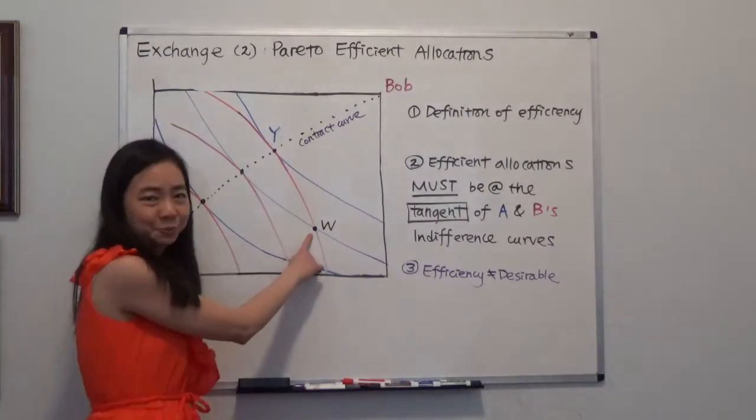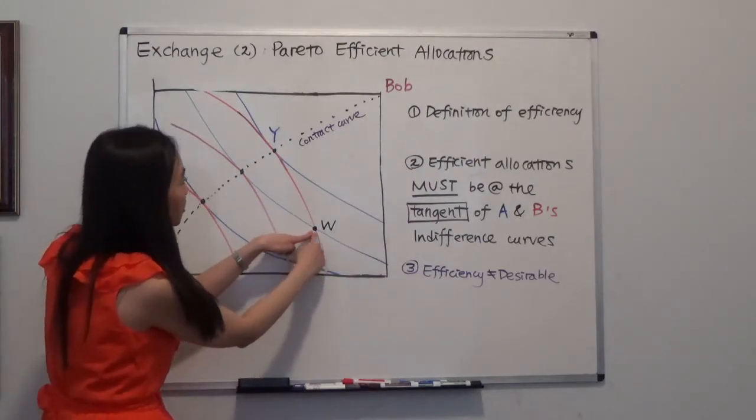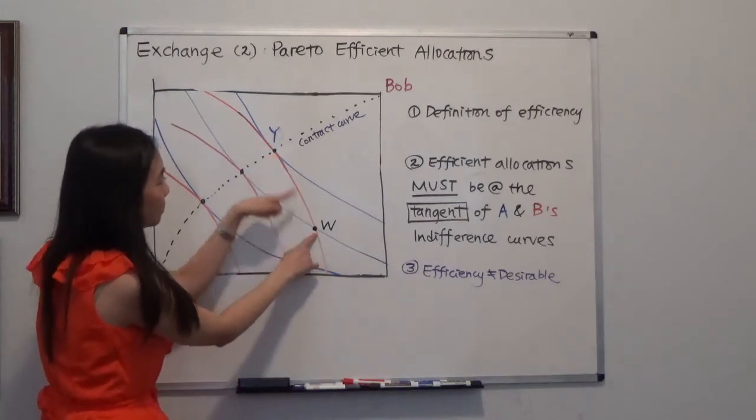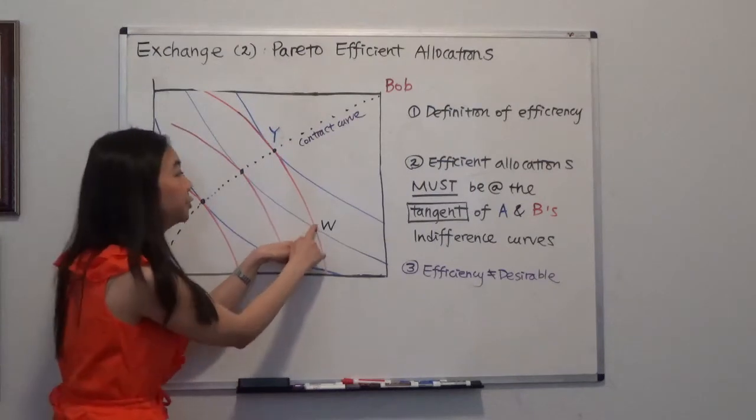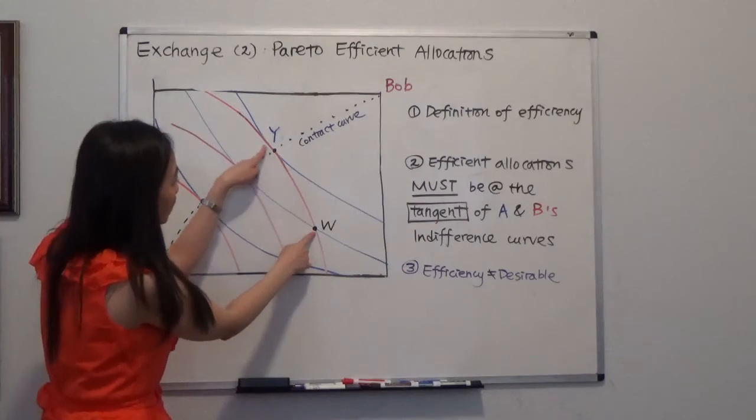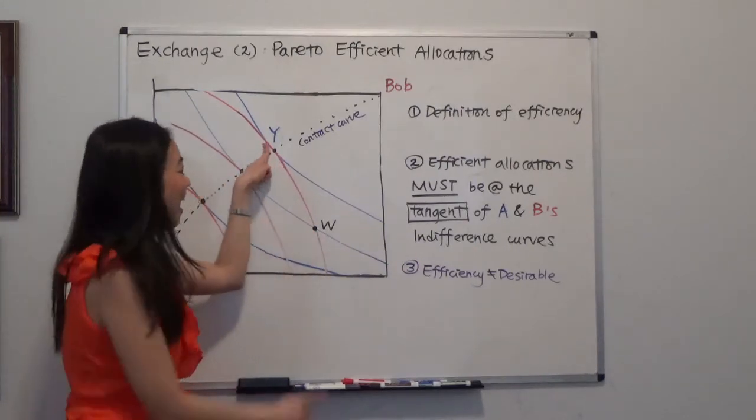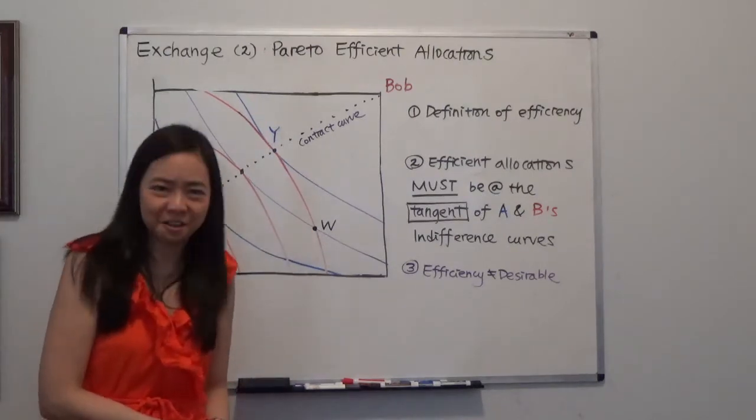So for example, our endowment W, notice that you can move from W to Y. In that case, if you're moving from W to Y, you can see Alice's utility has been improved when moving to a higher indifference curve. And Bob's is on the same utility curve, so Bob's utility is not hurt. And therefore you know point W is inefficient.